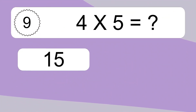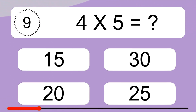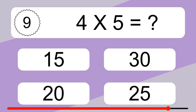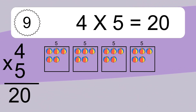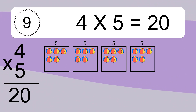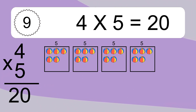4 times 5 equals what? We have 4 boxes, and each box has 5 colorful balls inside. If you count all the balls in all the boxes together, you will have 4 times 5 balls. This equals 20 balls.